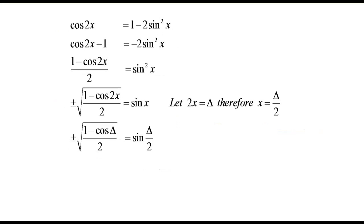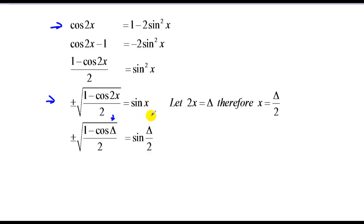For the sine identity, we again start with the cosine of 2x, this time equaling 1 minus 2 sine squared of x, because we're looking to end up with the sine identity. We add or subtract 1 to both sides, then divide by negative 2 — notice, since we're dividing by a negative, the signs switch. Then we square root both sides and make the substitution of 2x equal to delta, therefore x equals delta over 2. So instead of 2x we have delta, and instead of x we have delta over 2. The sine of half of an angle equals the square root of 1 minus the cosine of that angle over 2.